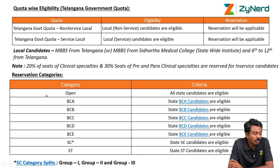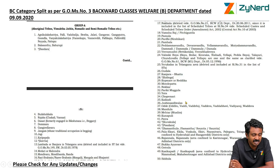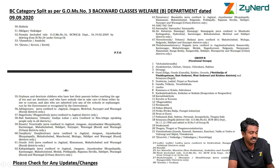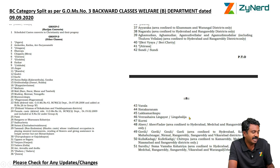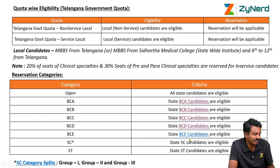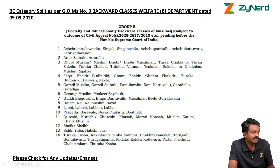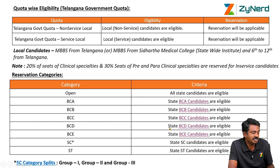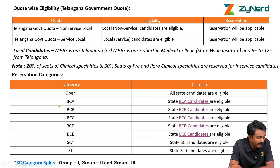How do you define your category? All candidates are eligible for open seats. BCA candidates are eligible for BCA seats. BCB candidates are eligible for BCB seats. BCC candidates are eligible for BCC seats — this includes schedule caste converted to Christianity and certain other classes. BCD candidates are eligible for BCD seats, and Muslim community candidates are eligible for BCC seats. SC/ST candidates are also eligible. So depending upon your eligibility, you will select accordingly. If I am BCA, I am eligible for BCA and also open — I will select both.